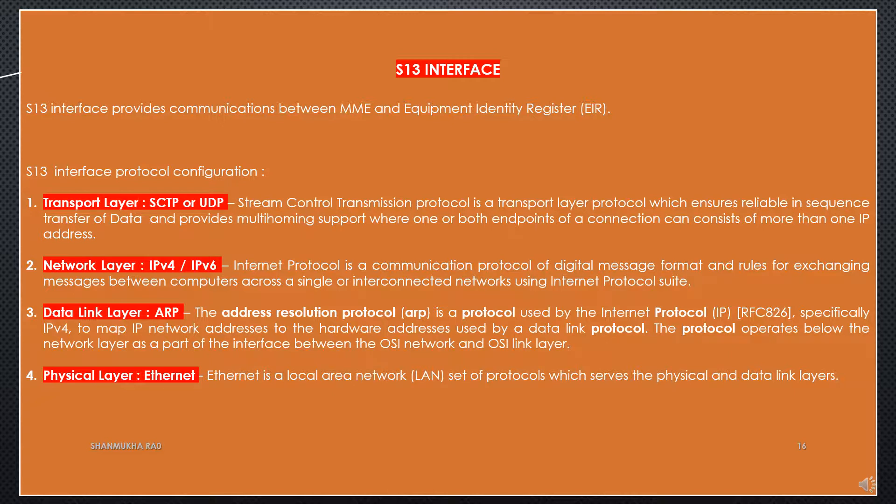Second is the network layer where IPv4 or IPv6 is used — Internet Protocol is a communication protocol of digital message format and rules for exchanging messages between computers across single or interconnected networks using Internet Protocol suite. Third is the data link layer where ARP is used — the Address Resolution Protocol maps IP network addresses to hardware addresses used by a data link protocol; the protocol operates below the network layer as part of the interface between the OSI network and OSI link layer. Fourth is the physical layer where Ethernet is used — a local area network set of protocols serving the physical and data link layers.